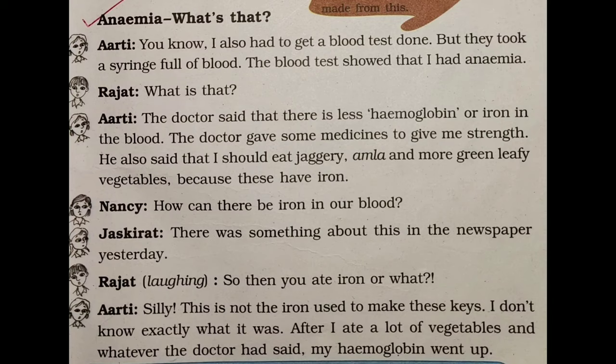Rajat is asking Arti: 'What is anemia?' The doctor said there is less hemoglobin or iron in the blood. In our blood there is a pigment called hemoglobin. In red blood cells, iron is present in hemoglobin — that is why the color of our blood is red. Whenever the hemoglobin or iron quantity in our blood becomes less, the blood color changes from deep red to pale red.